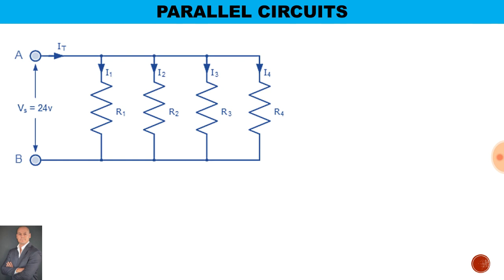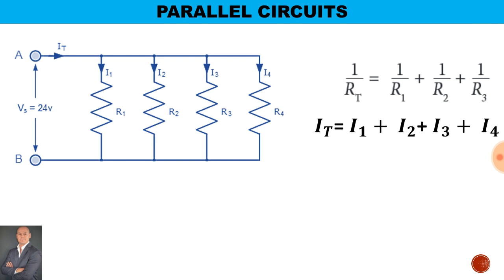For parallel circuits, to calculate the total resistance, 1 over RT is equal to 1 over R1 plus 1 over R2 plus 1 over R3. The current is the sum of the current through each branch, and the total voltage is equal to the voltage across the parallel branch.